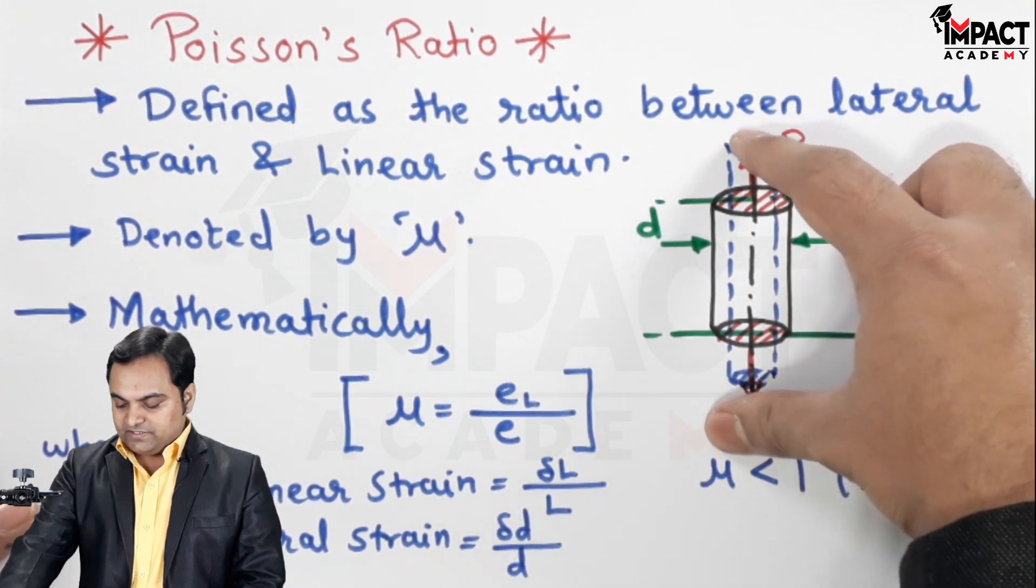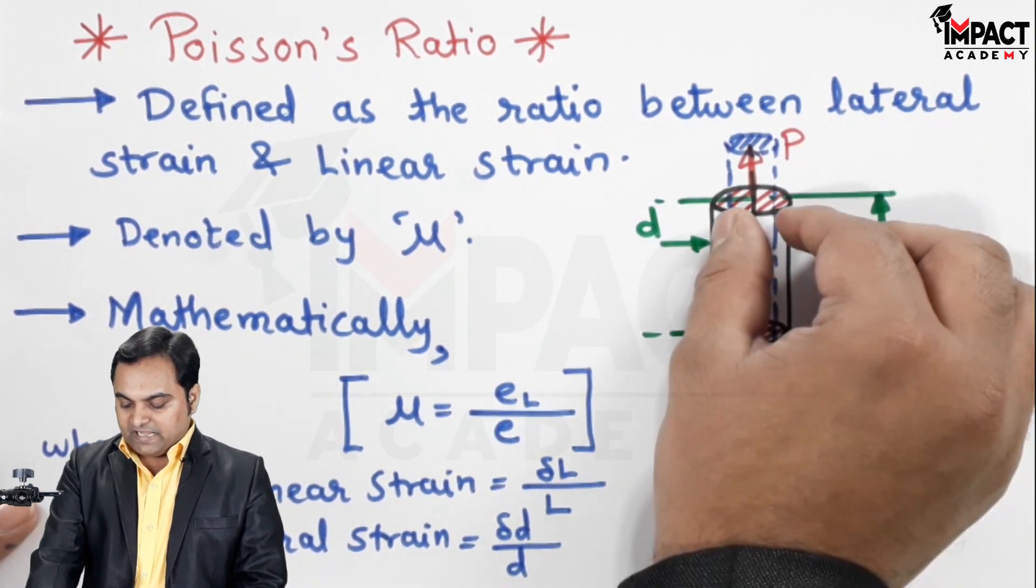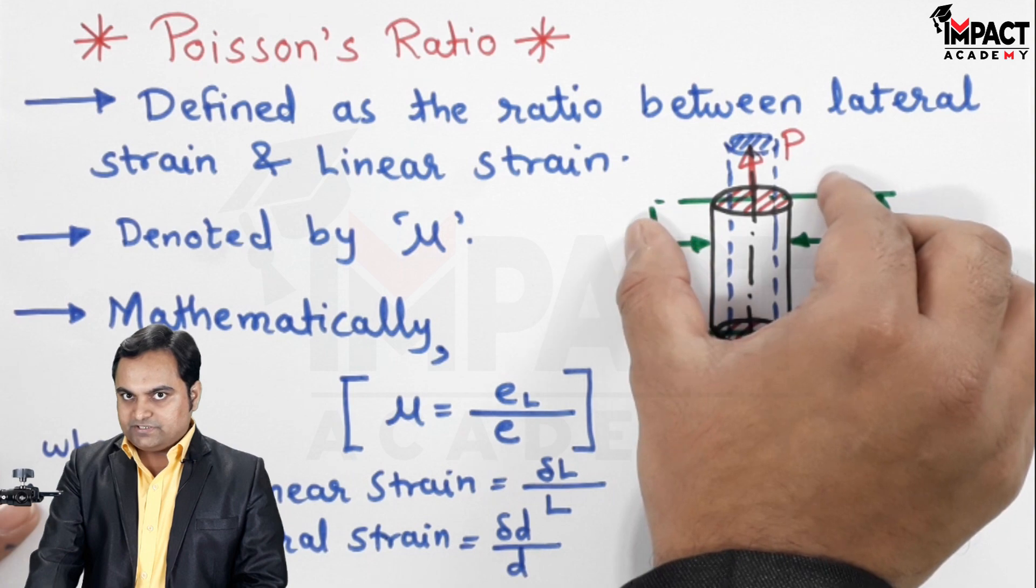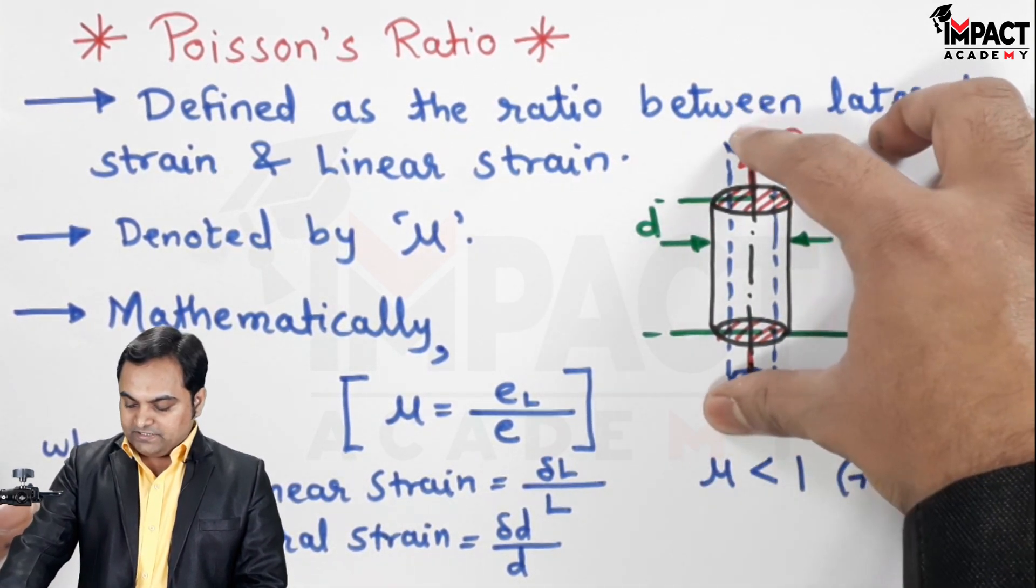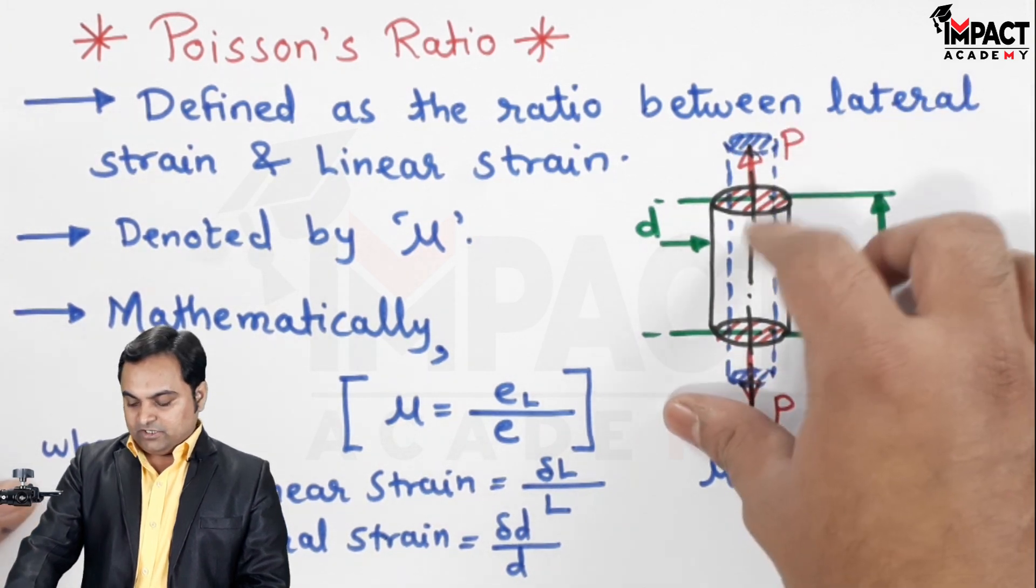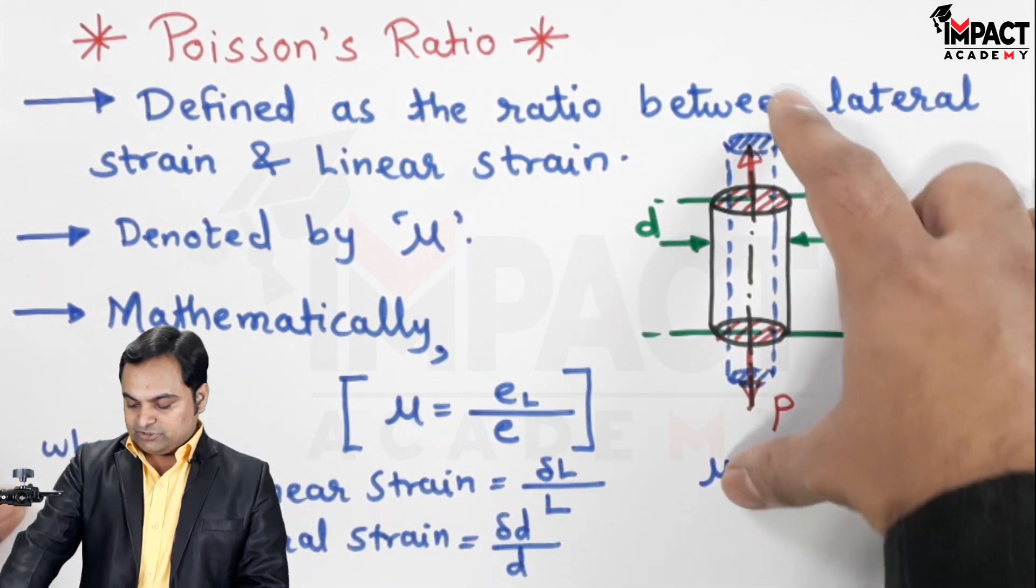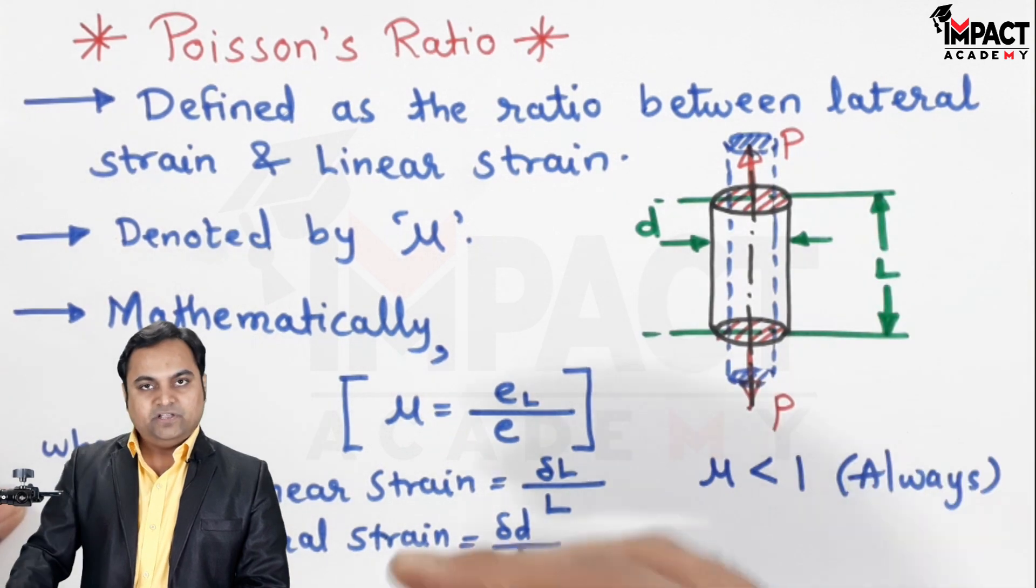So the effect of linear strain would be decrease in length, and in that case the ratio would be negative because the length is decreasing and we are considering compressive stresses are negative.